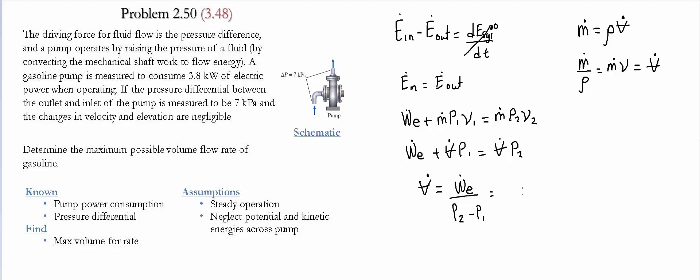Substituting the values from the problem: 3.8 kilowatts divided by 7 kilopascals. The ratio of these two values gives us 0.54.